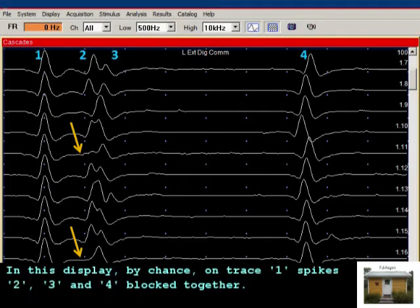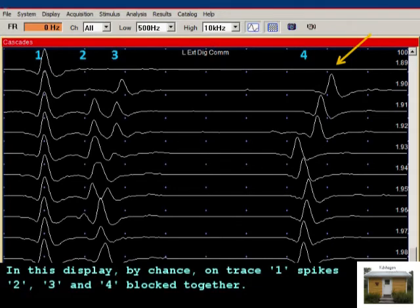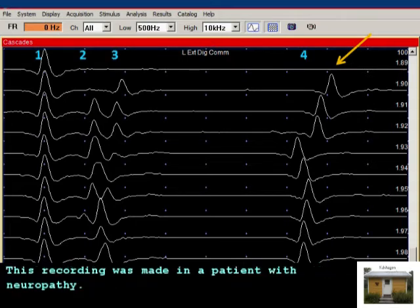In this display, by chance, spikes 2, 3, and 4 block together. This recording was made in a patient with neuropathy.